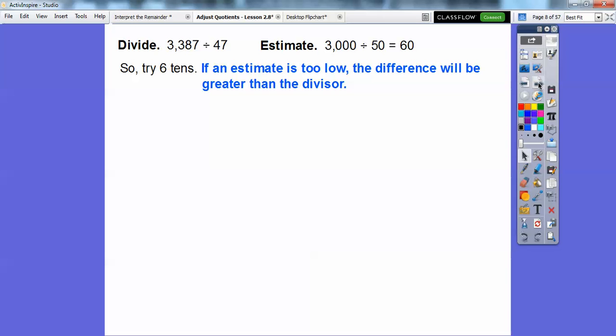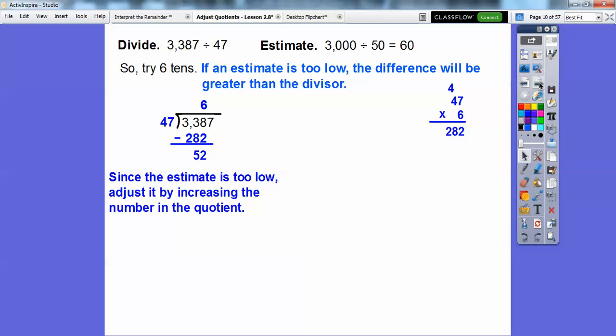If an estimate is too low, the difference will be greater than the divisor. So 6 tens—notice we put the 6 over the tens spot because it's 6 tens. 47 times 6, we get 282. Look at this difference right here, it's 52. This difference is greater than the divisor, so our estimate was too low. Since the estimate's too low, we're going to adjust it by increasing the number in the quotient.